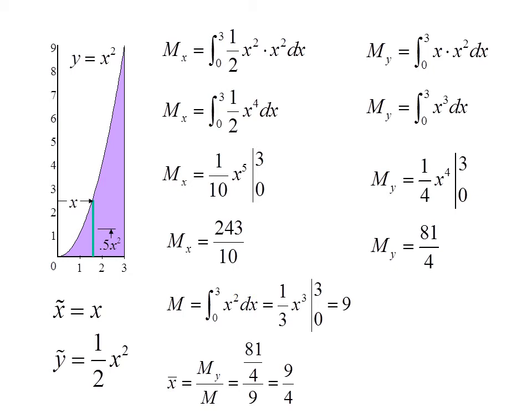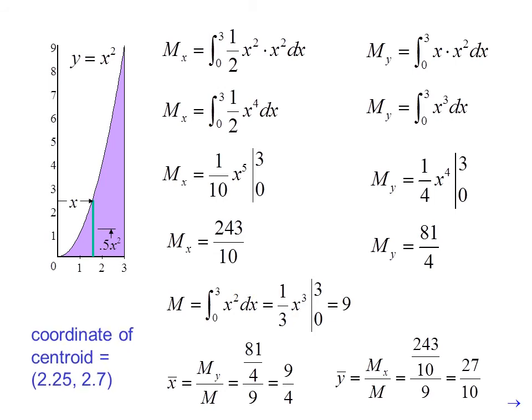So x̄ is M_y over M, or 81 fourths over 9, which is 9 fourths. ȳ is M_x over M, or 243 tenths over 9, or 27 tenths. The coordinate of the centroid then is 2.25 and 2.7. So I could drill my hole and insert my eye bolt for the cable at that point on the shape.